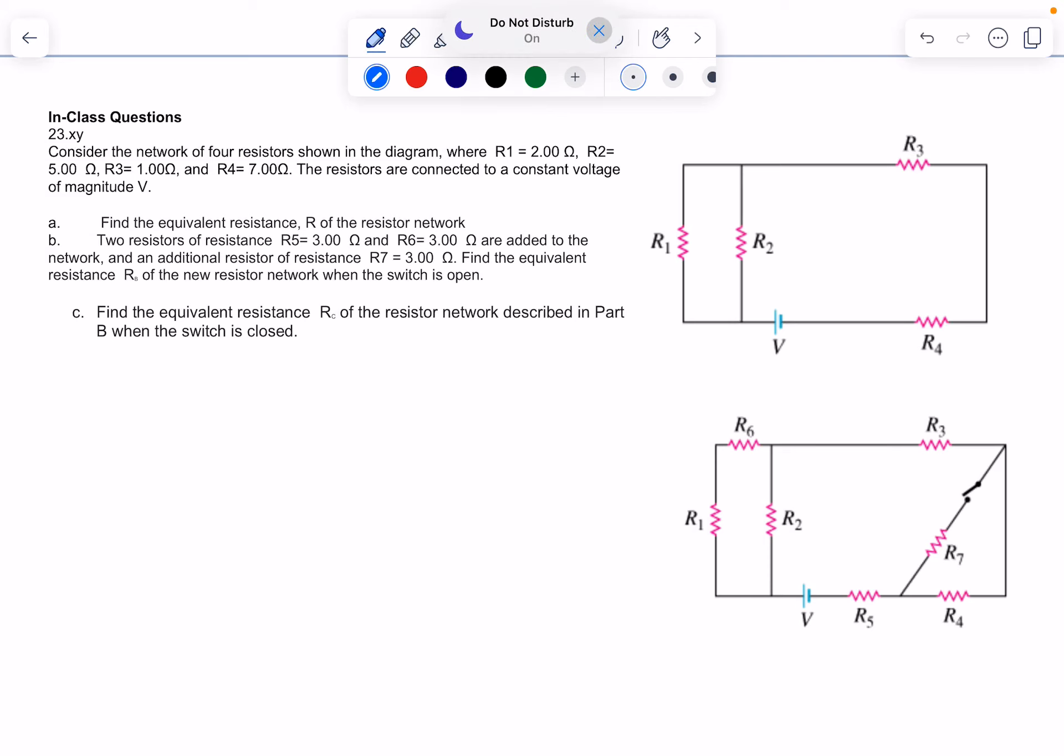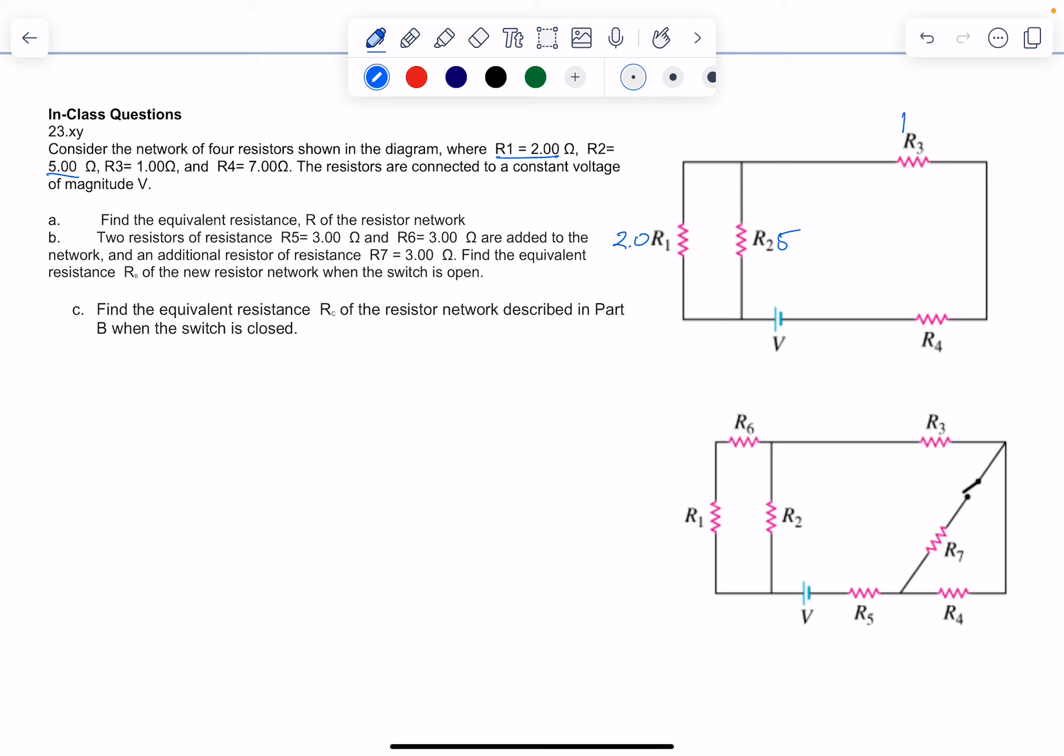We've got four resistors to label. R1 is 2.0, R2 is 5, R3 is 1. Actually, these are all ohms. And R4 is 7 ohms.